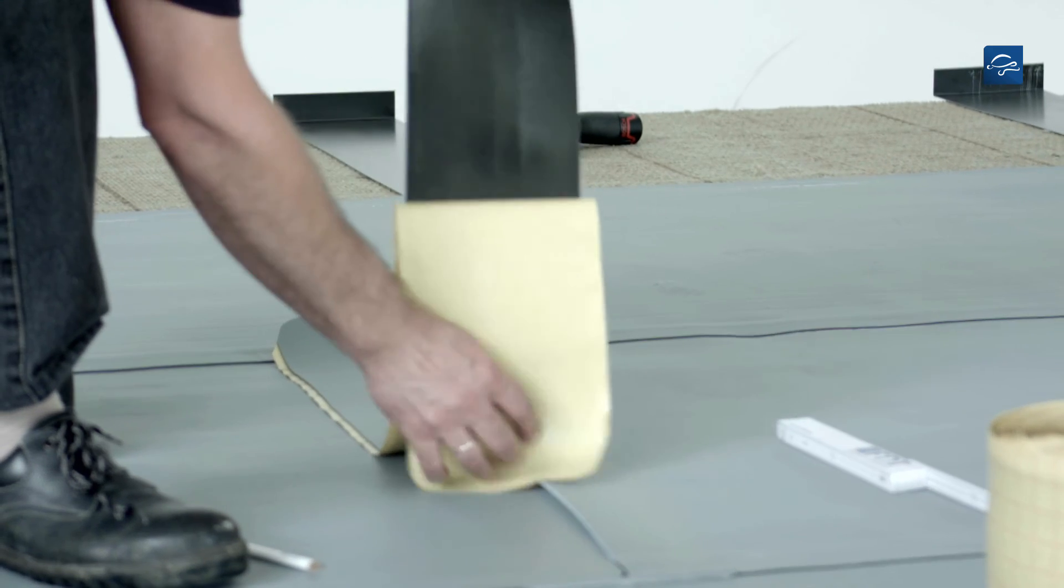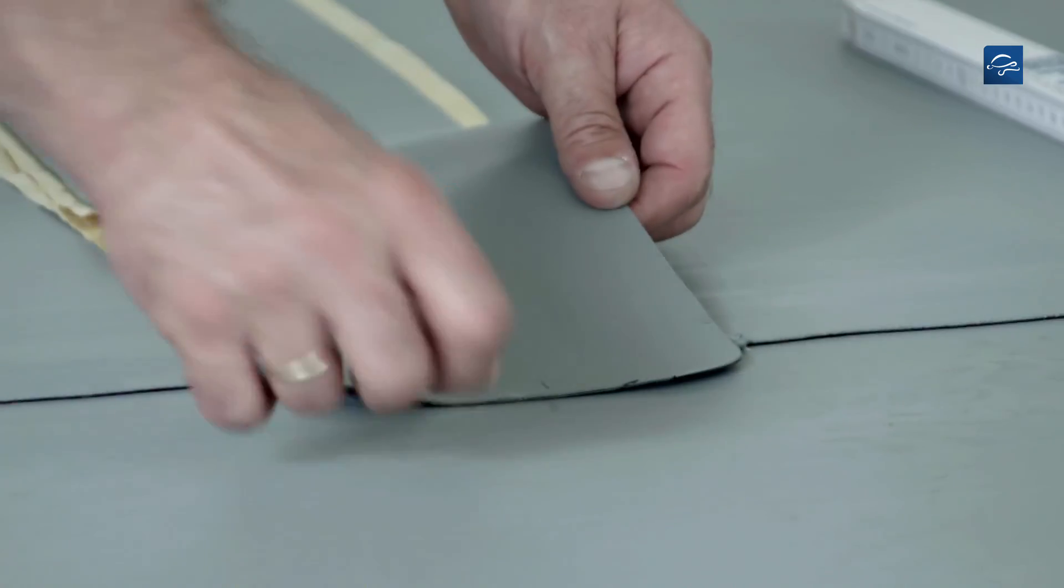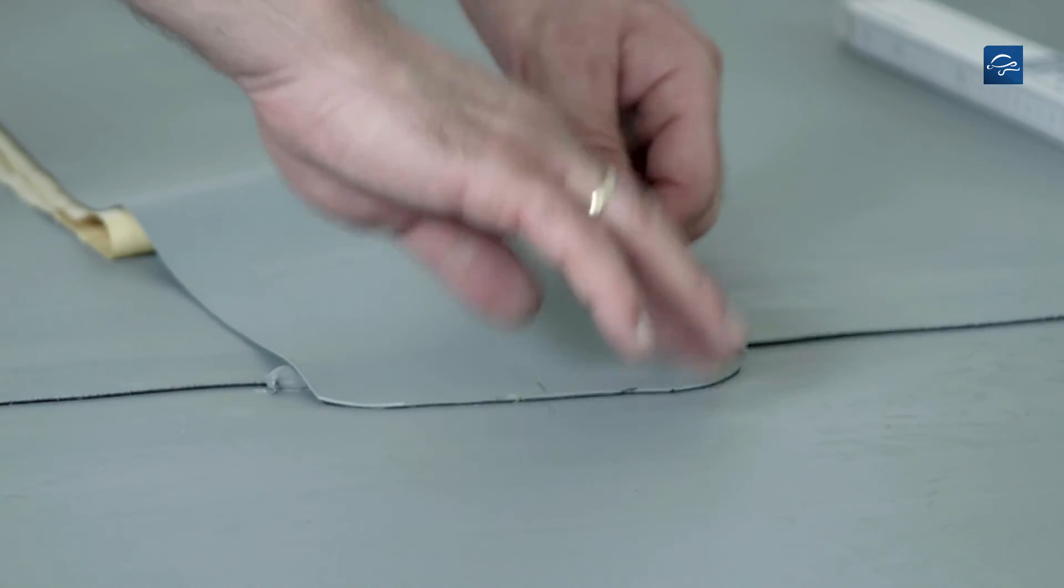After removing the release film, place the cut to size cover tape on the center of the marking and roll it on thoroughly.